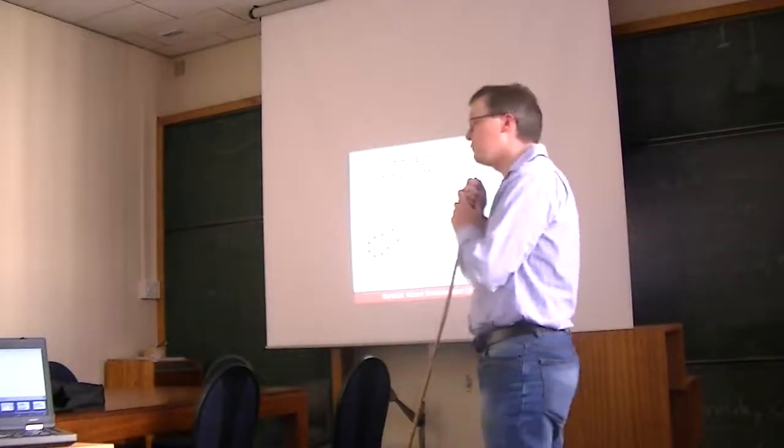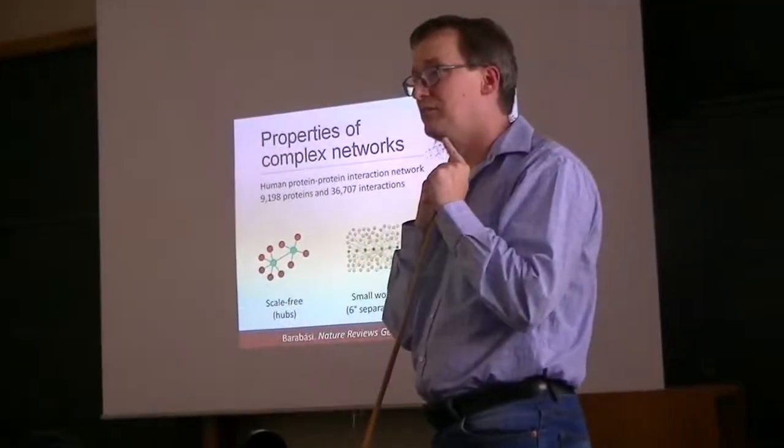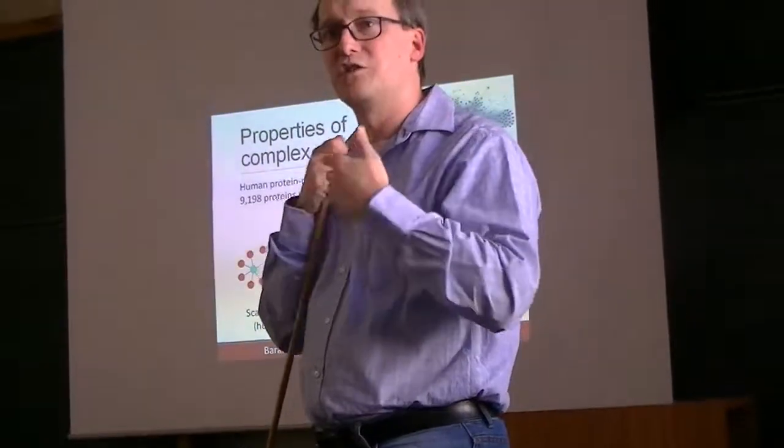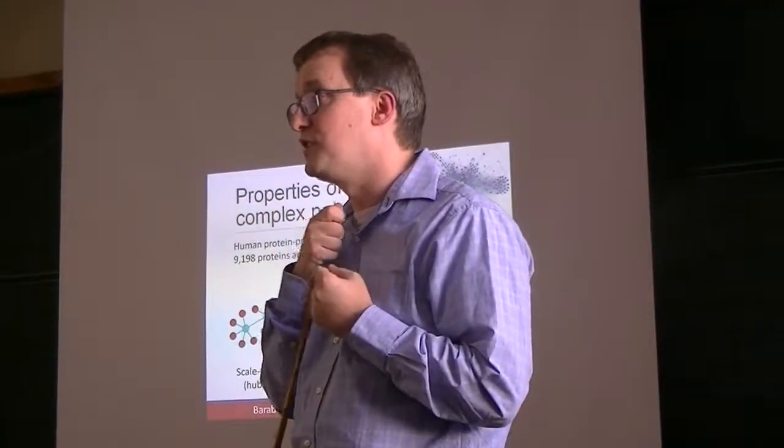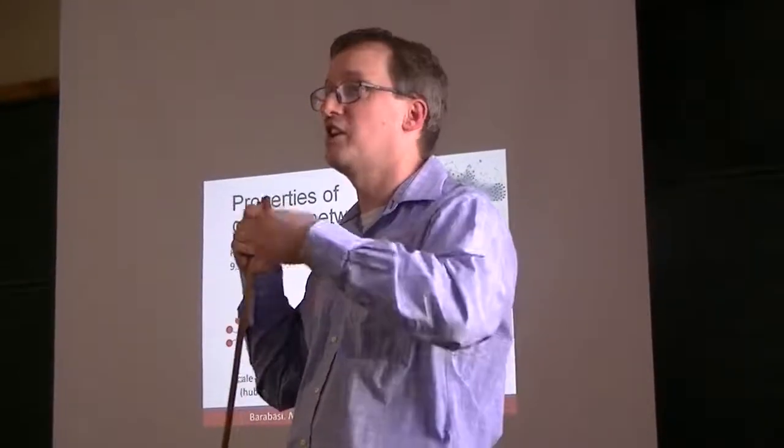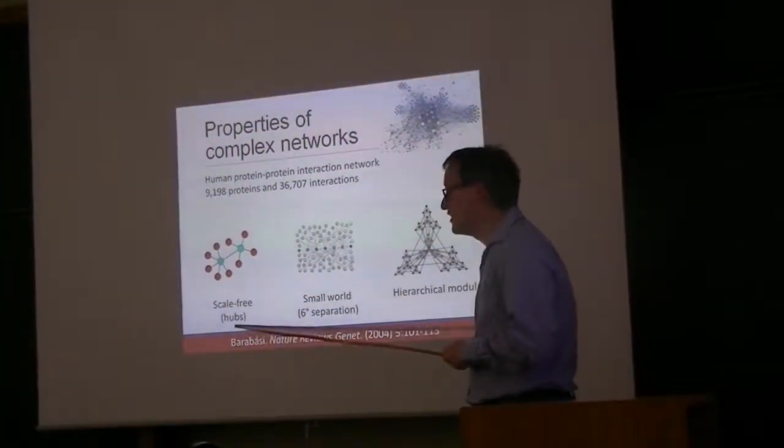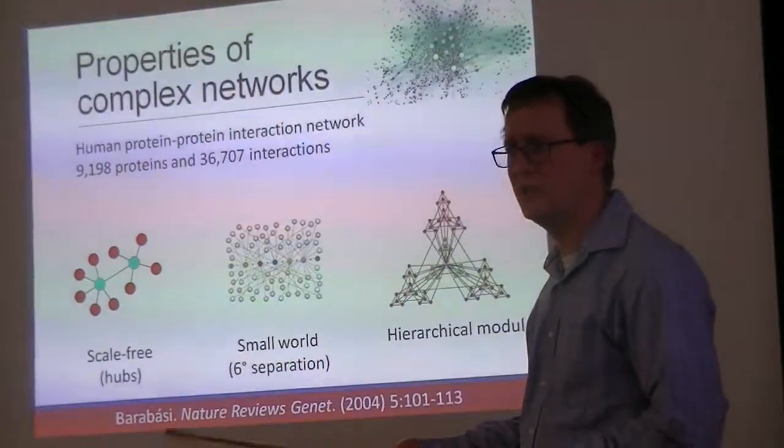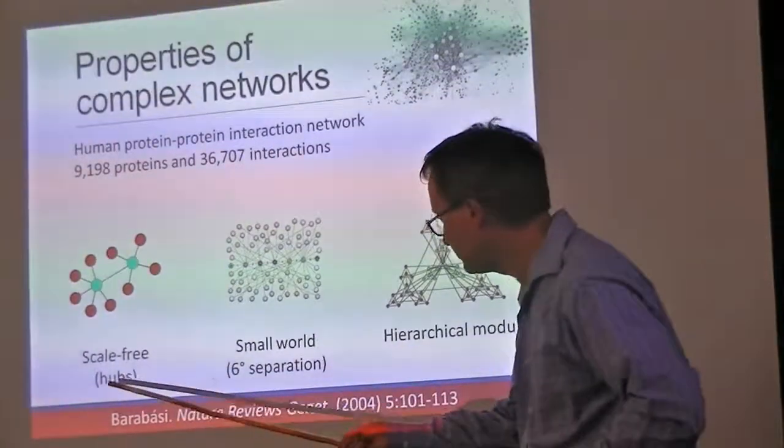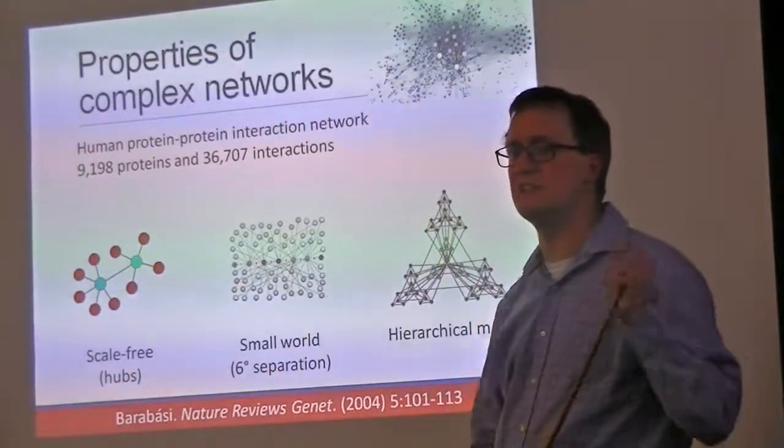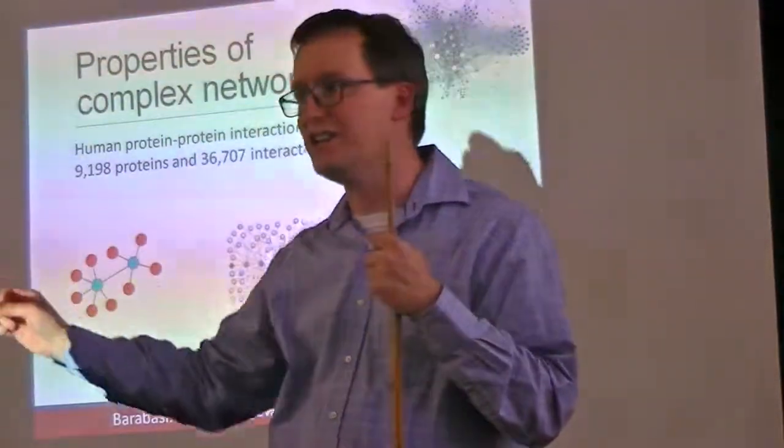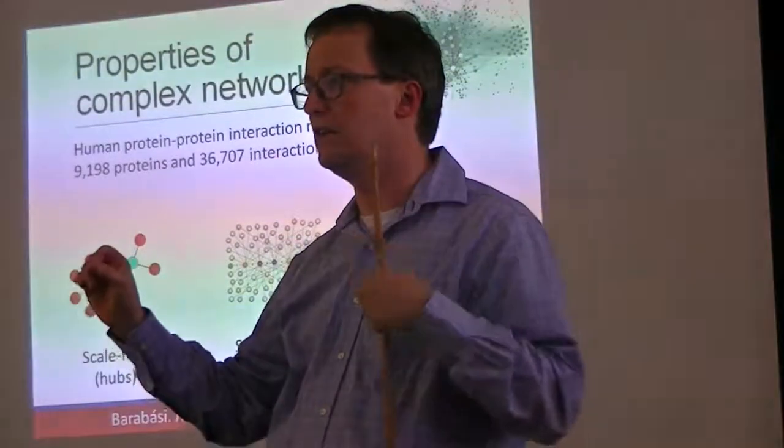The type of network that we construct from the data tells us something about where those data came from. Three concepts everyone should have in understanding biological networks. At first, when computer scientists started using networks to model what biological systems looked like, they thought it would be useful to construct random networks that would let them study the properties of these things. But they soon found that these random models did not capture what the actual structure of these data looked like.